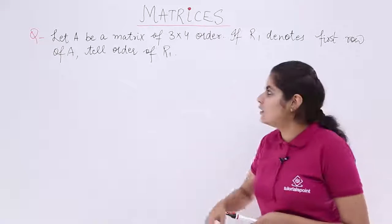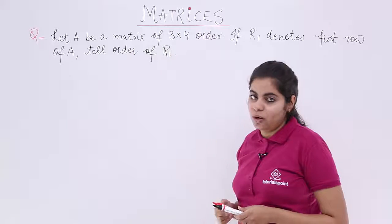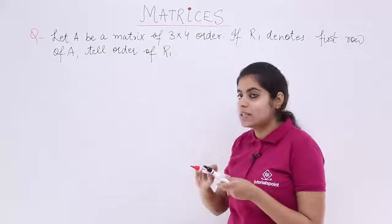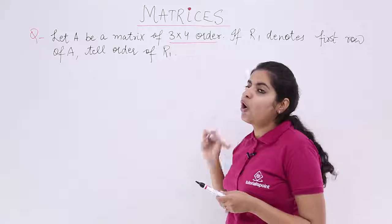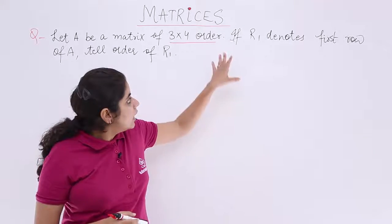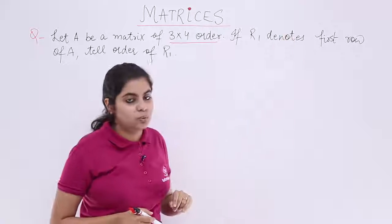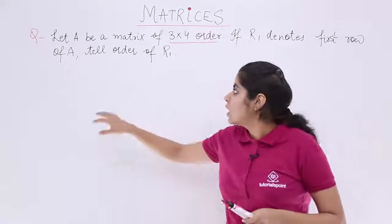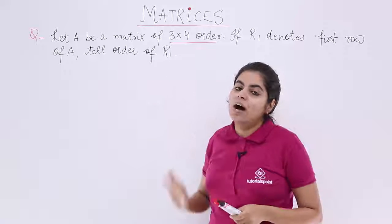The question is what? Let A be a matrix of 3 by 4 order. I have a matrix whose order is given. It is a 3 by 4 ordered matrix and what else is said in the question? If R1 denotes the first row, R1 is what? It is the first row of A. Tell the order of R1.